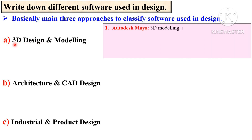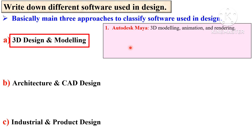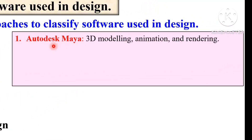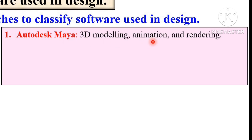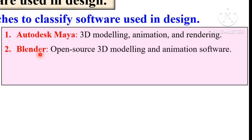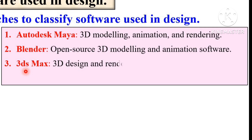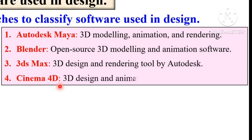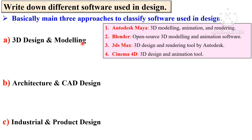For the first category, 3D design and modeling, there are several different softwares. First is AutoCAD Maya, generally used for 3D modeling, animation, and rendering. Second is Blender, which is open source 3D modeling and animation software. Third is 3ds Max, a 3D design and rendering tool by Autodesk. Fourth is Cinema 4D, a 3D design and animation tool. These are the main four software used nowadays in this category.